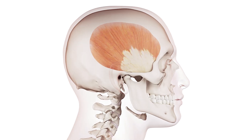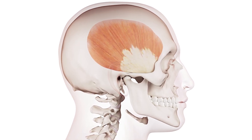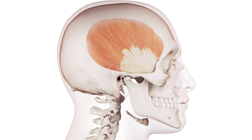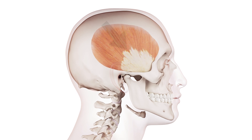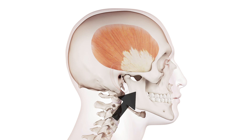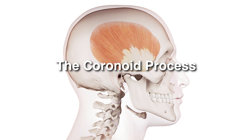The temporalis muscle has a broad attachment here on the side of the skull. You can see that the muscle itself is a good-sized muscle, even though it's flat. It then becomes a tendon, tucks under the zygomatic arch, which is your cheekbone, and then it inserts into this process, which is called the coronoid process, and that's part of the lower jaw.